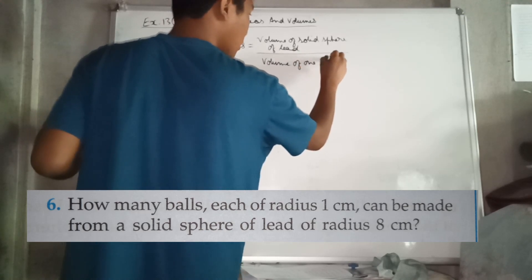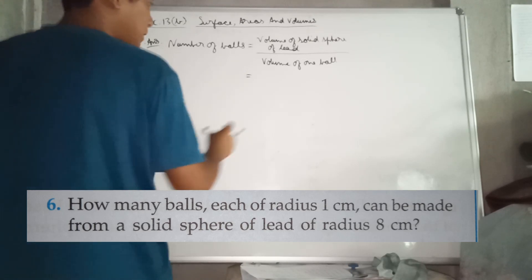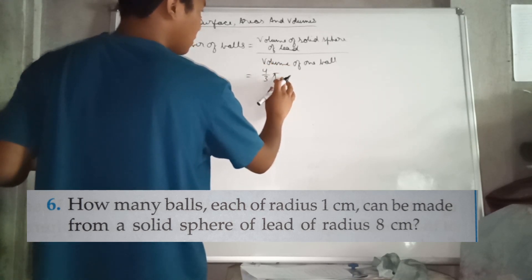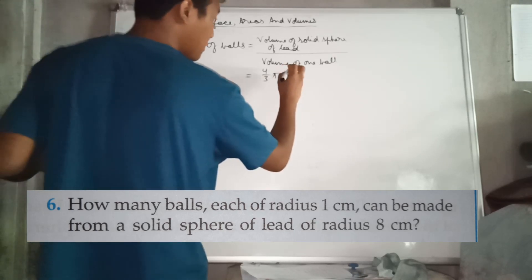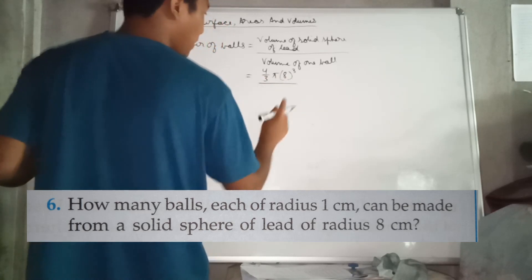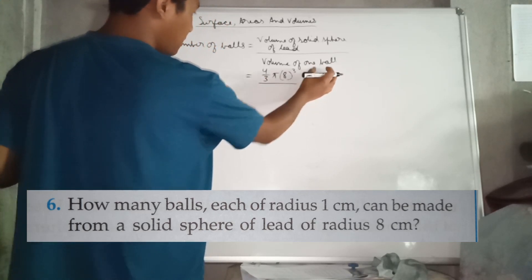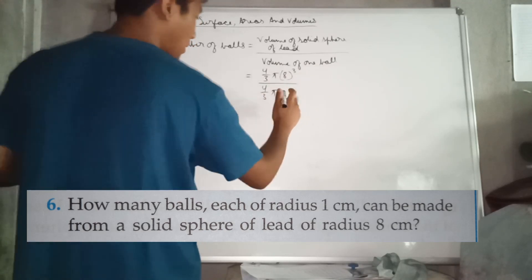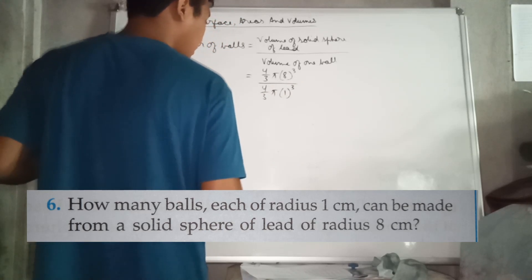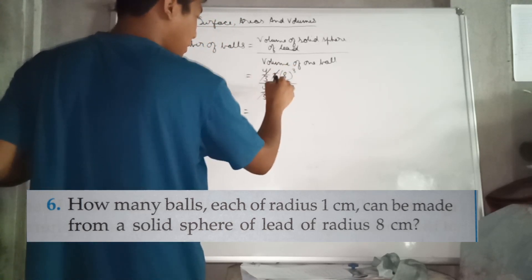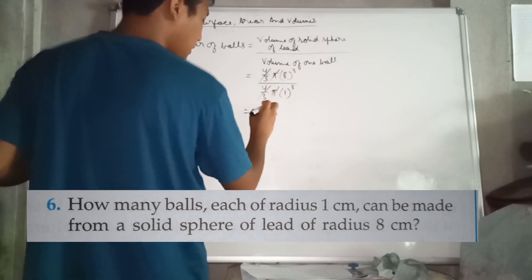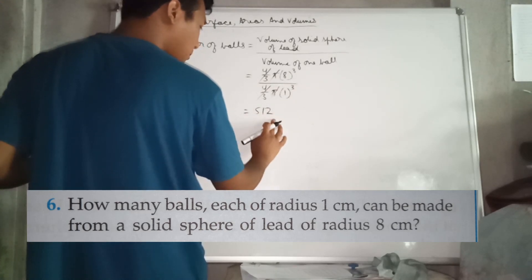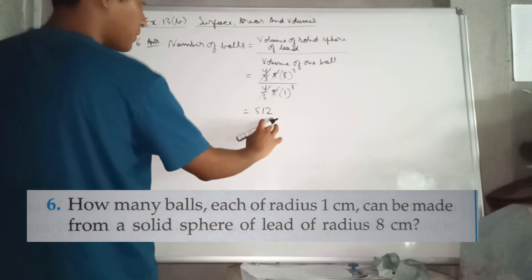Volume of the solid sphere = (4/3) π × 8³. Volume of one ball = (4/3) π × 1³. The (4/3) π terms cancel, leaving 8³ / 1³ = 512 / 1 = 512. Therefore, the number of balls is 512.